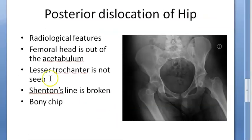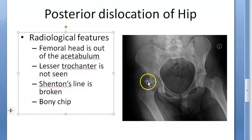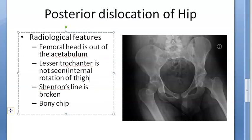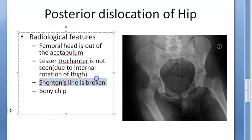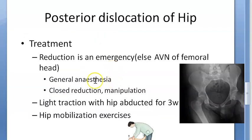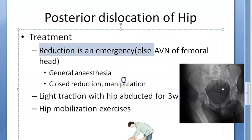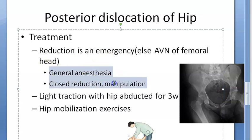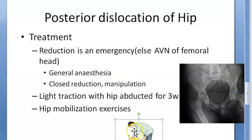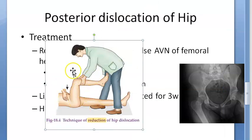In unconscious patients it can be undetected, so whenever there is a femur fracture, always do an x-ray of the pelvis. Radiological features: the femoral head is out of the acetabulum, the lesser trochanter is not seen due to internal rotation of the thigh, Shenton's line is broken, and there may be a bony chip from the acetabulum or femoral head. Treatment: reduction is an emergency — give general anesthesia and perform closed reduction.